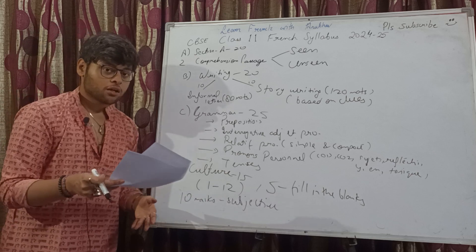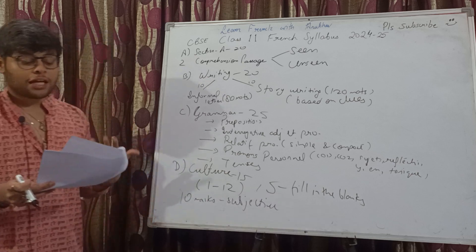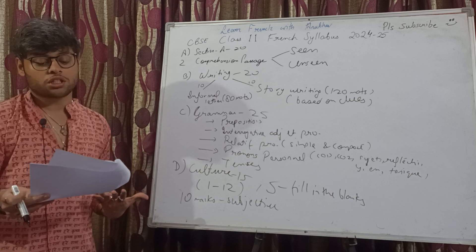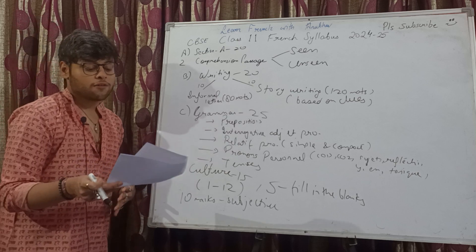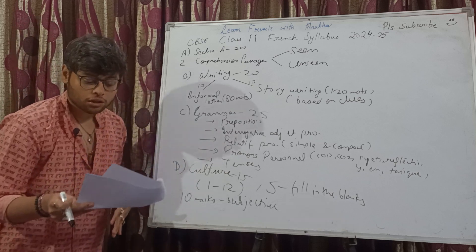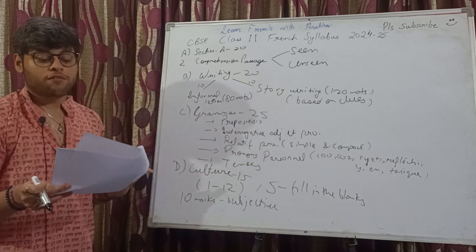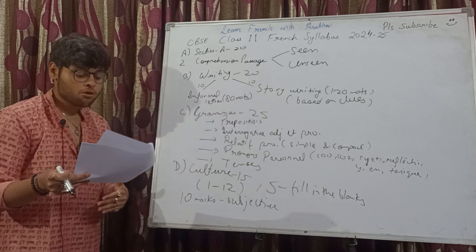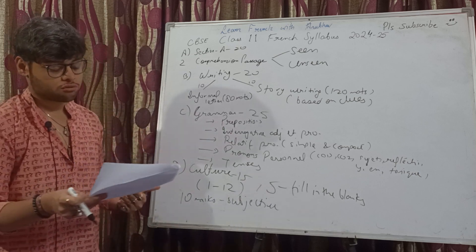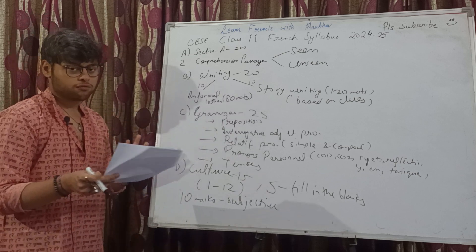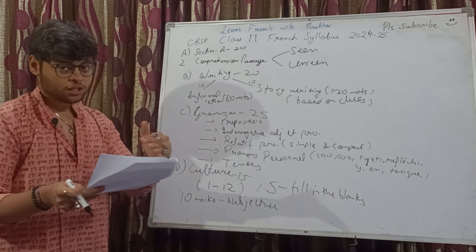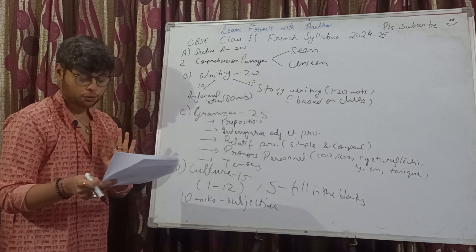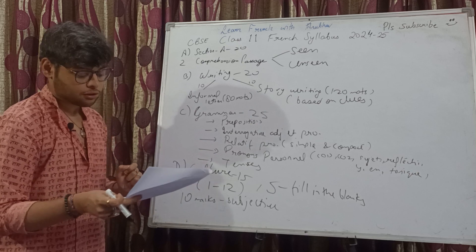For the project worth 10 marks, any of the following themes can be chosen: you can make the project on a French or Francophone writer, a Francophone country, a French cuisine, or a French region. Any one of these four topics you can choose.